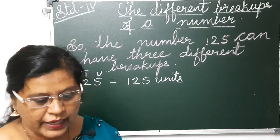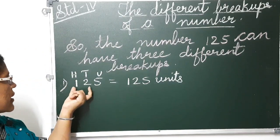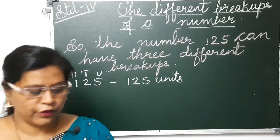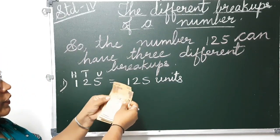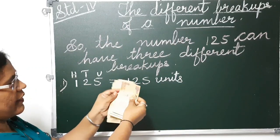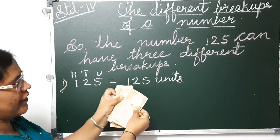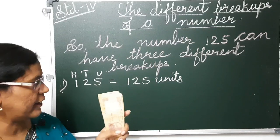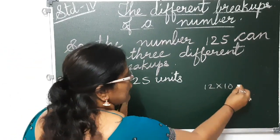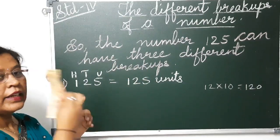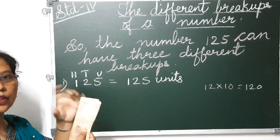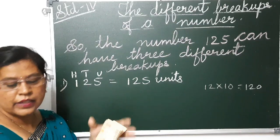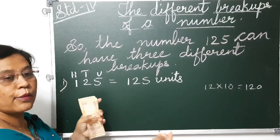The next break up: if you have 12 tens — meaning 10-rupee notes — you can have 12 tens. That is 12 into 10, which equals 120. So you are breaking this 3-digit number into 12 tens, meaning 12 into 10 equals 120. And the remaining is 5 units. For 5 units you can give your friend 5 one-rupee coins. So 120 plus 5 one-rupee coins.